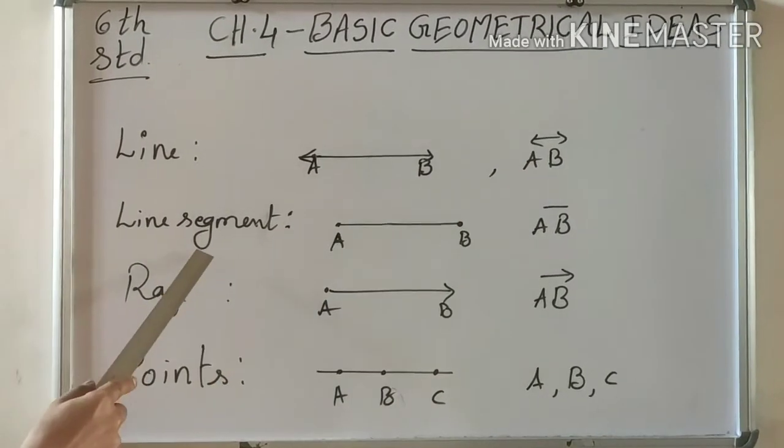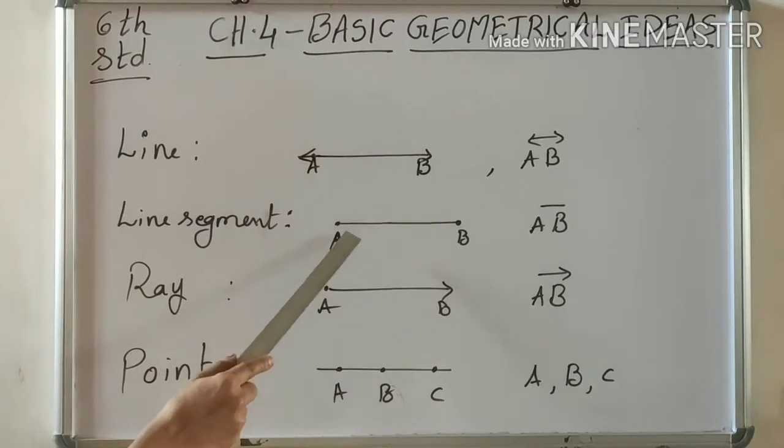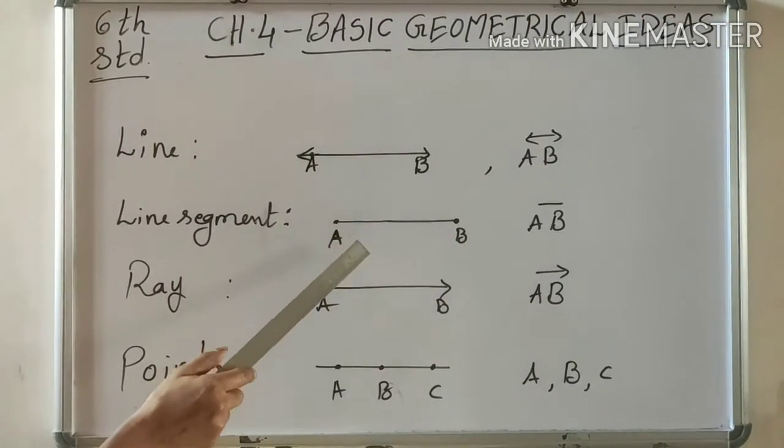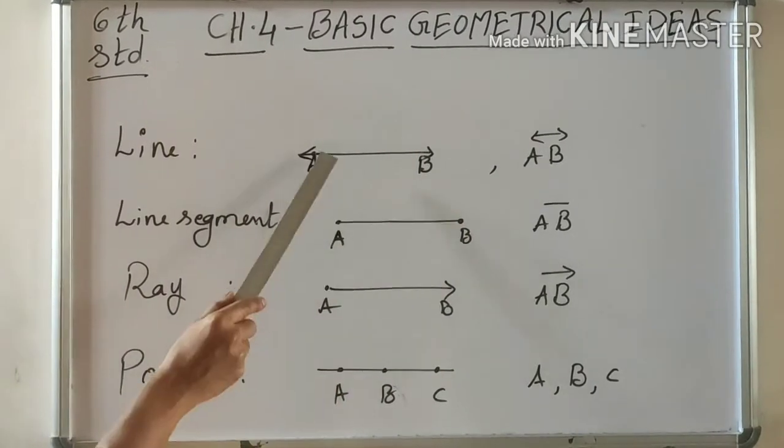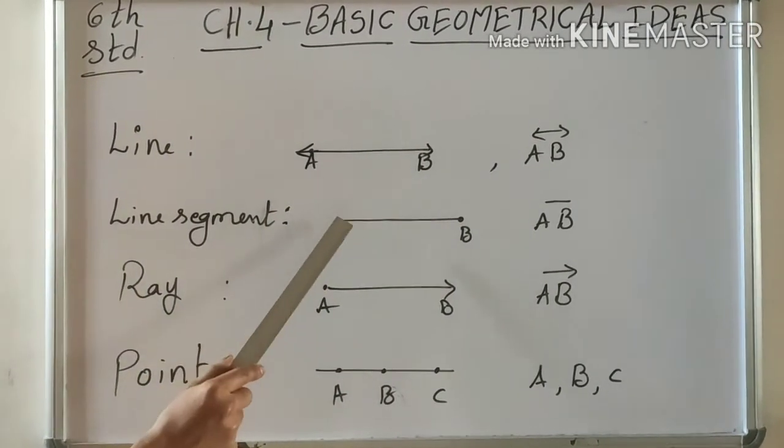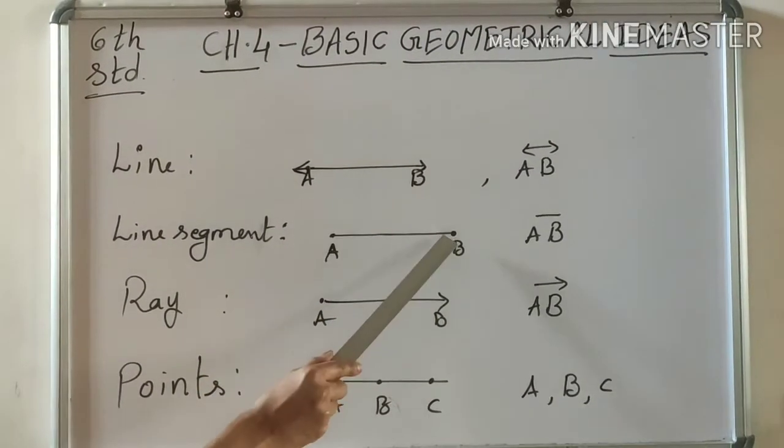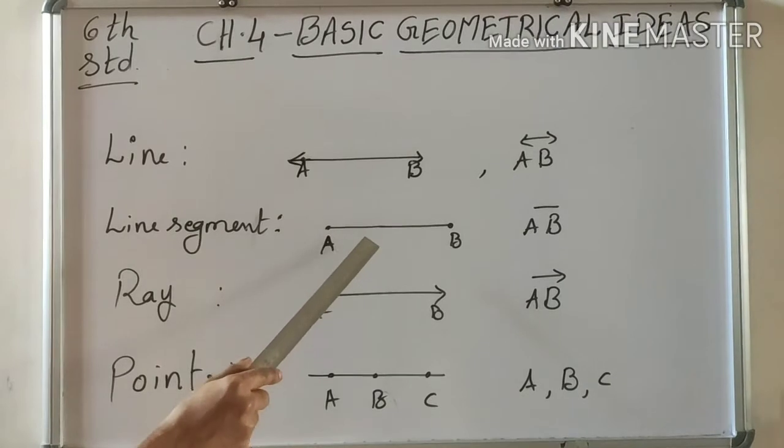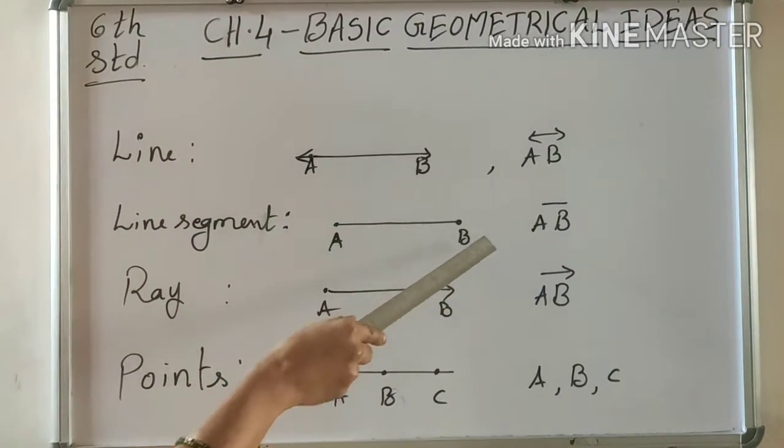Next, line segment. A line segment is the line between two fixed points. That is, it has a particular distance. Both ends are definite points. So the distance between these two points is the line segment. We mention line segment this way, with a bar above the letters.